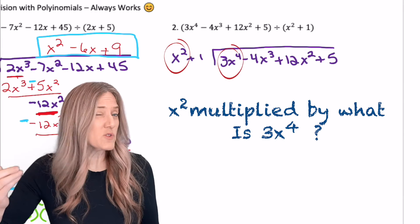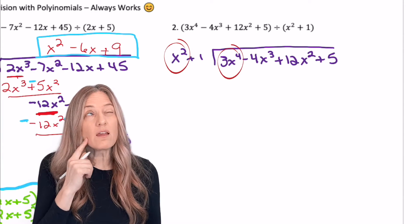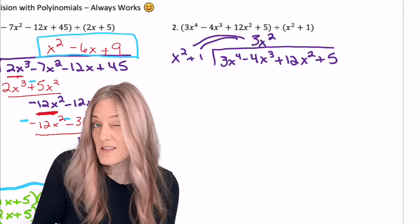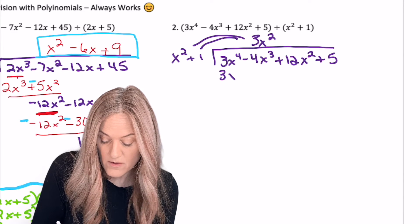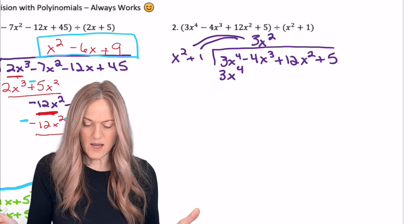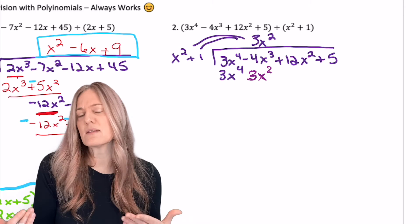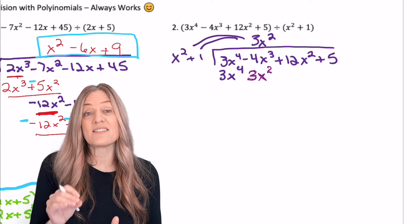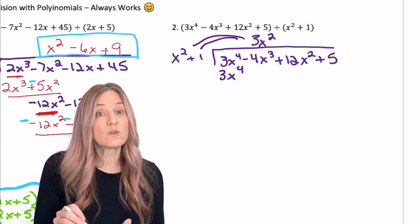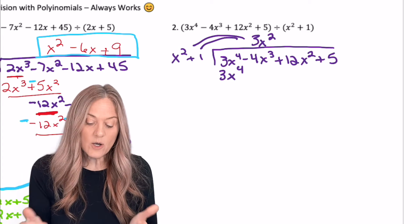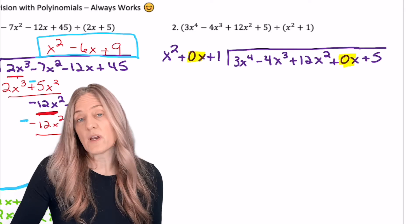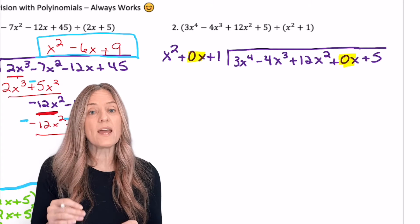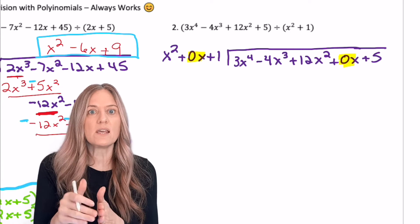Same idea — x squared times what gives me 3x to the fourth? Think 3x to the fourth divided by x squared: 3x squared. Now I'm going to distribute — multiply into the binomial. 3x squared times x squared is 3x to the fourth; 3x squared times 1 is 3x squared. Wait — I have an x cubed term in this polynomial. Sometimes we need to go back and save a space. I went from x squared, no x term, then a 1. I also noticed I was missing the x term in the other polynomial. So keep in mind that you may have to put in zeros for any time you are missing one of the terms.